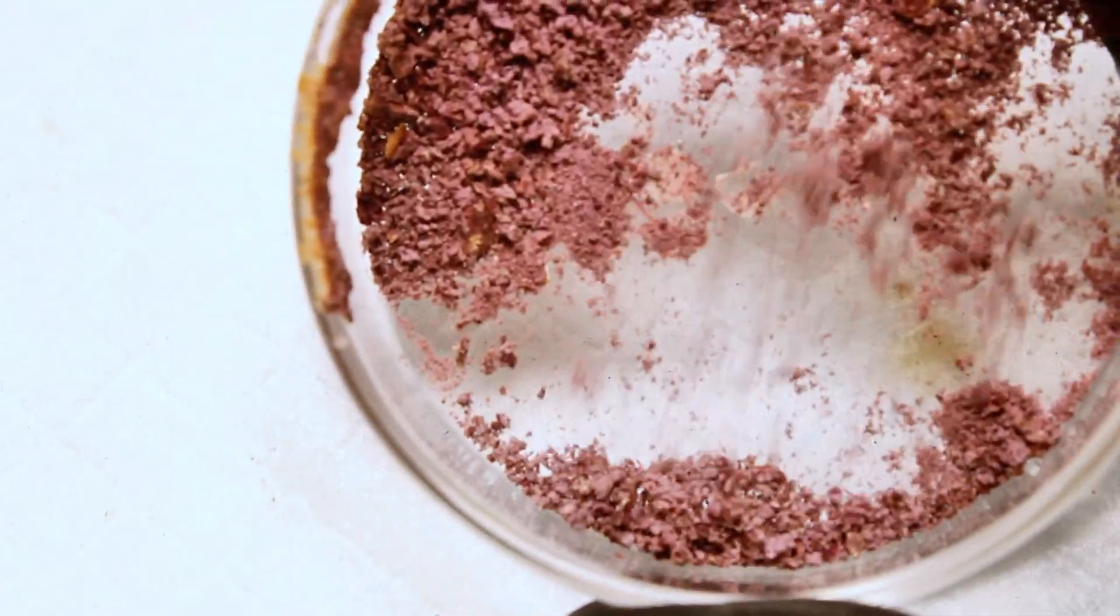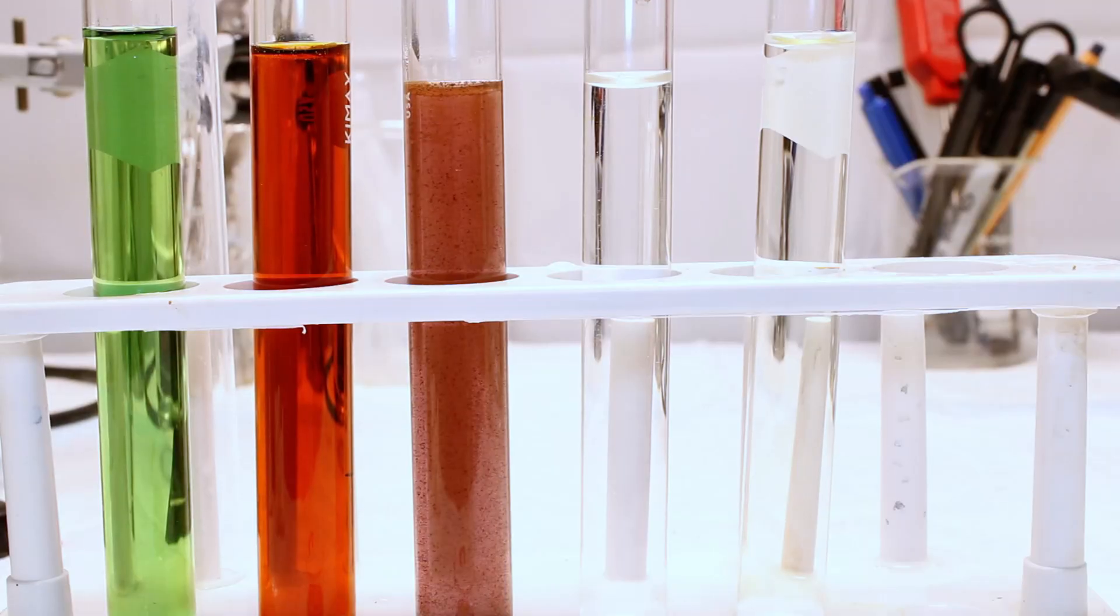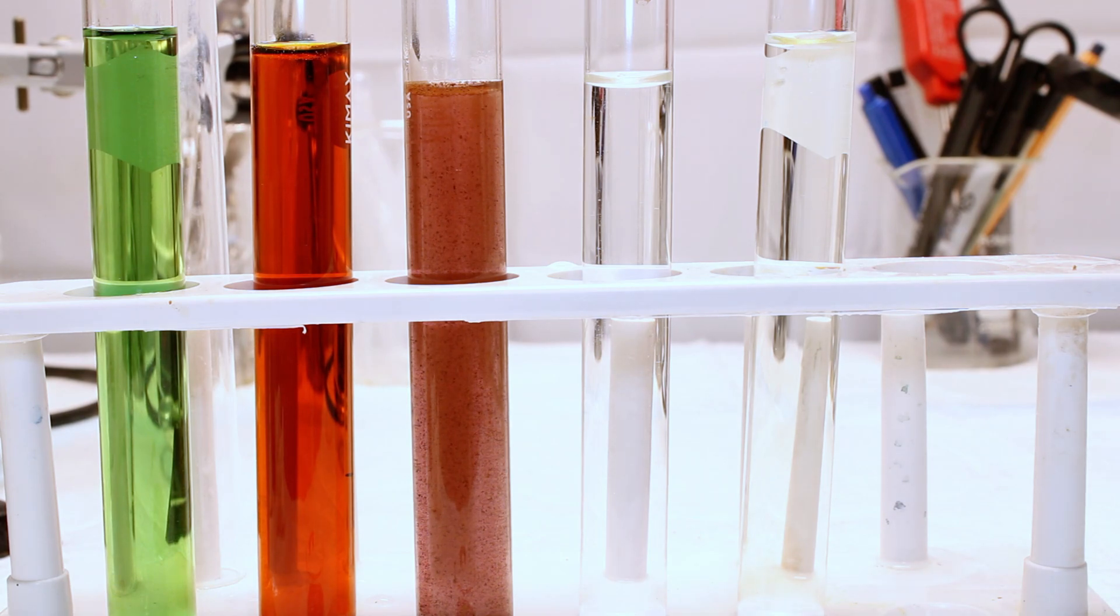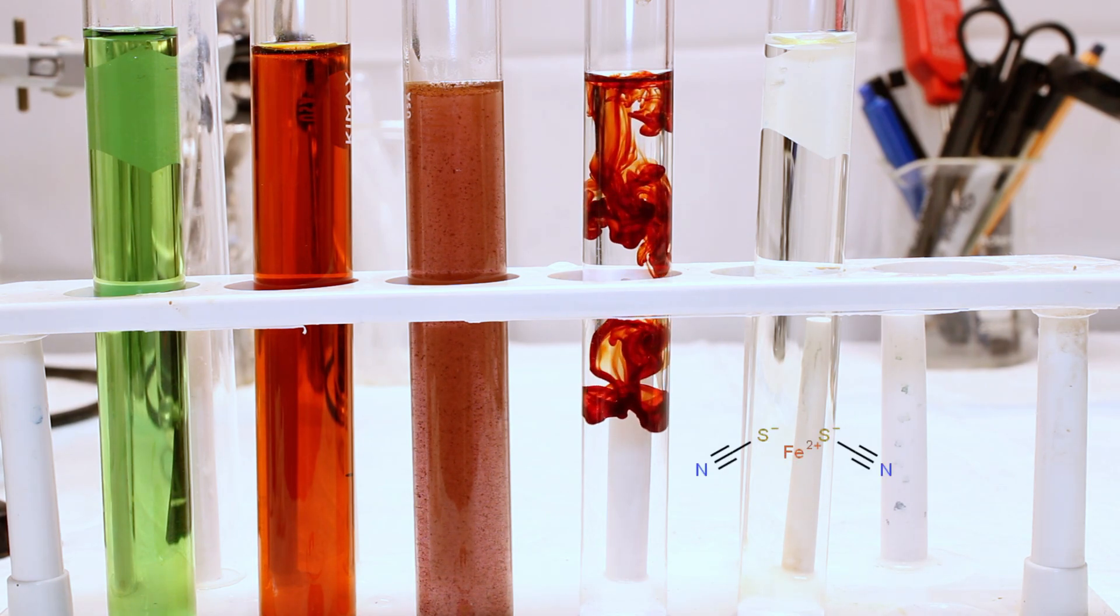For the first one, the addition of iron(III) chloride, or any iron(III) salt, to a solution of potassium thiocyanate will form a blood red complex, which makes sense considering your blood gets its color from an iron complex.